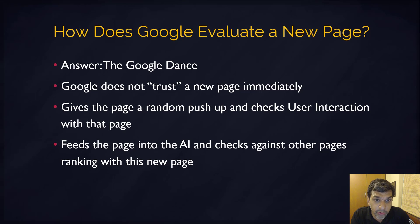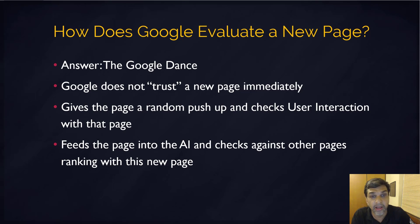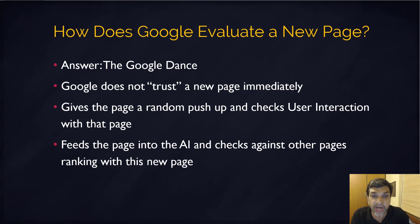So what Google does is push your page up a few times for a few users, up the ranks, and then it evaluates how people behave. If it gets good user signals and finds that people are interacting a lot more with that content than with other pages, then the Google dance diminishes and Google starts giving your page a more solid, firm, and higher ranking — because it starts trusting that content, knowing that users are trusting it. The AI algorithm is based on user experience.